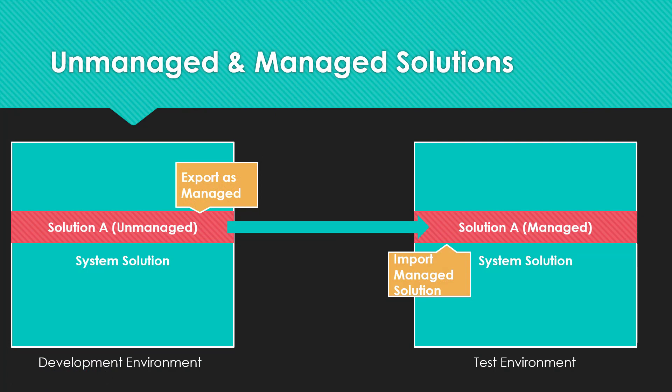A solution can be either unmanaged or managed. Unmanaged solutions are used in your development environment while you are making changes to your application. From your development environment, you can export the unmanaged solution either as an unmanaged or managed solution. It is recommended that when you export the unmanaged versions of your solution, you should check them into your source control system so that you can have version control and track all changes made during development. Managed solutions are deployed to any environment that isn't a development environment — such as a test environment, a UAT environment, an SIT environment, or a production environment.